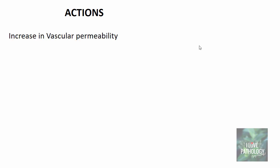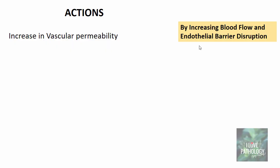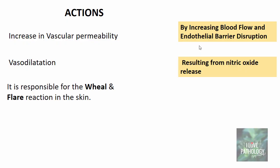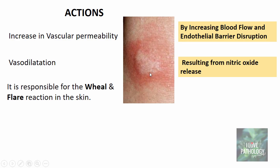Now, coming to the actions of histamine. The first and most important action is increase in vascular permeability, achieved by increasing blood flow and causing endothelial barrier disruption. The second important action is vasodilation, which happens essentially through nitric oxide release — nitric oxide is the major cause of vasodilation. The combination of these two actions is responsible for the wheal and flare reaction on the skin. The wheal is the elevated area due to increased vascular permeability, and the flare is the surrounding red area due to vasodilation.